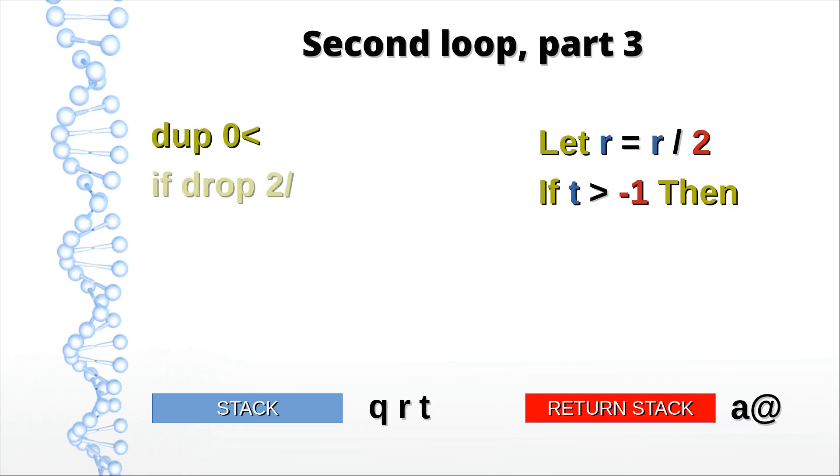If t is less than zero, we have to get rid of it. So let's do that one first. Now r is on the top of the stack, so we can easily divide it by two. We're done. Let's go to the second branch. We have to replace z by t. Z is still located on the return stack, so we retrieve it and subsequently discard it. Then we push t on the return stack. Again, r is on the top of the stack, so we can divide it by two with a single word.